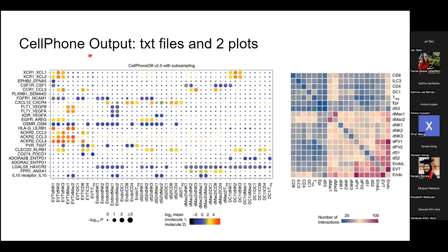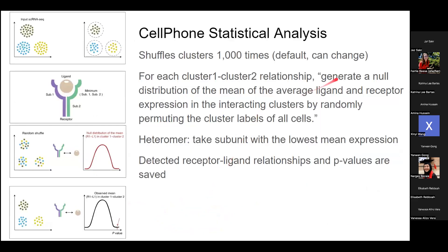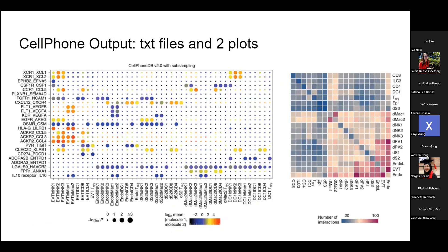Moving to CellPhone's outputs — they have two built-in plots, and they output all values and p-values so you can do more analysis yourself. The dot plot on the left shows each receptor-ligand interaction on the y-axis, and the cell type to cell type relationship on the x-axis. They calculate the mean of the ligand in one cluster and the mean of the receptor in another cluster, then average that — this is meant to be a proxy for the strength of the interaction. They show log2 of that value as color, and the size is the log of the p-value.